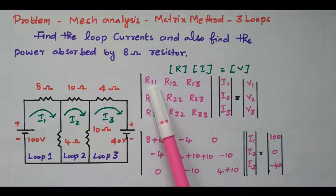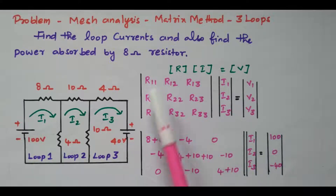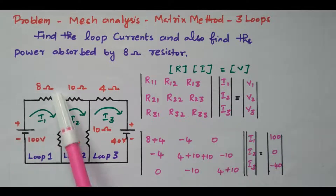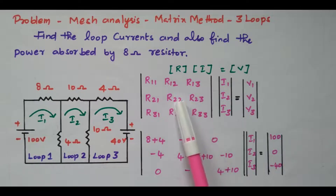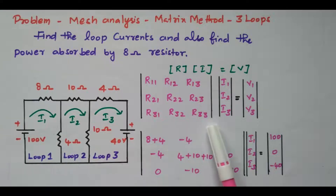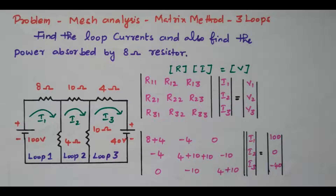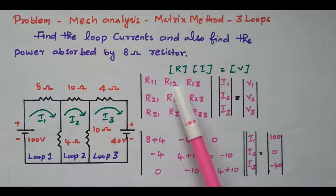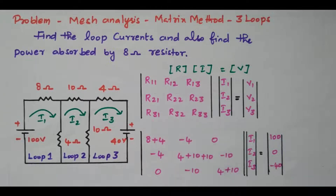R11 is nothing but the total resistance available in loop 1. R22 is the resistance available in the second loop. R33 is the resistance available in the third loop. R12 is the resistance available commonly between loops 1 and 2, and so on. We will find these values one by one.